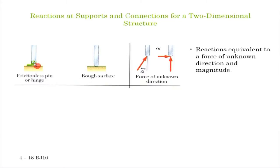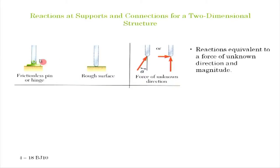A frictionless pin or hinge: the rod is free to rotate about the pin because there is no friction, so no torque is resisted. However, the joint is perfectly connected to the structure, so translational degrees of freedom — both vertical and horizontal — are constrained. Because these two translational degrees of freedom are constrained, this support can provide two unknown reactions: a vertical reaction and a horizontal reaction.